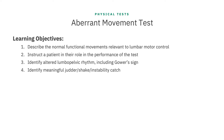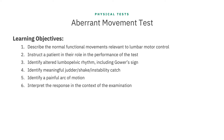You will also be able to identify altered lumbopelvic rhythm including Gower sign, identify meaningful judder, shake, and instability catch, identify a painful arc of motion, interpret the response in the context of the examination, and recall the strengths and limitations of this test for the diagnostic process.